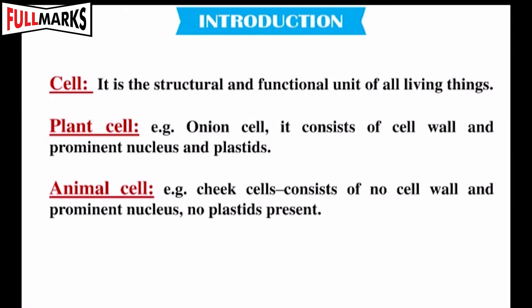The cell is the structural and functional unit of all living things. Plant cell example: onion cell — it contains a cell wall, a prominent nucleus, and plastids. Animal cell example: cheek cells — it consists of no cell wall, a prominent nucleus, and no plastids present.